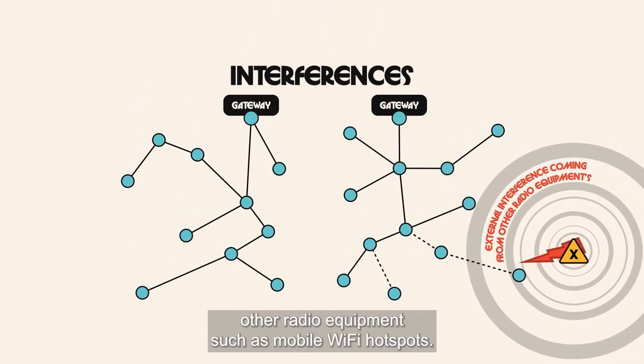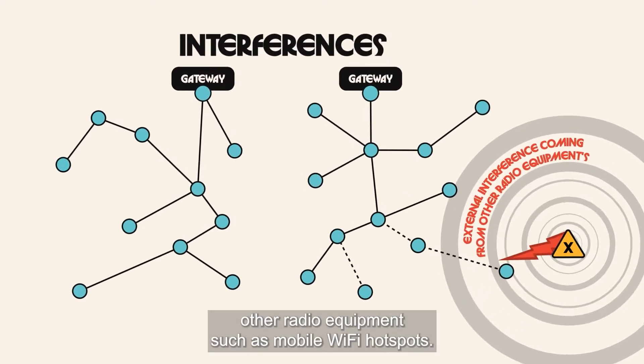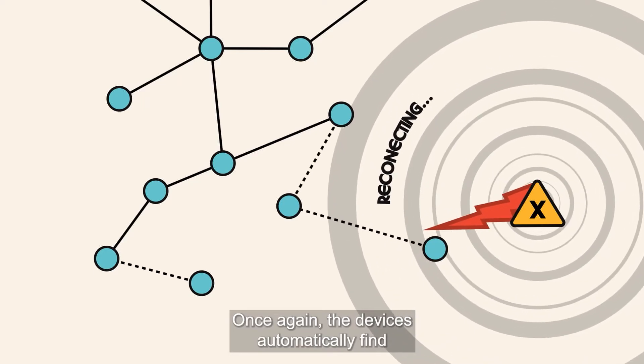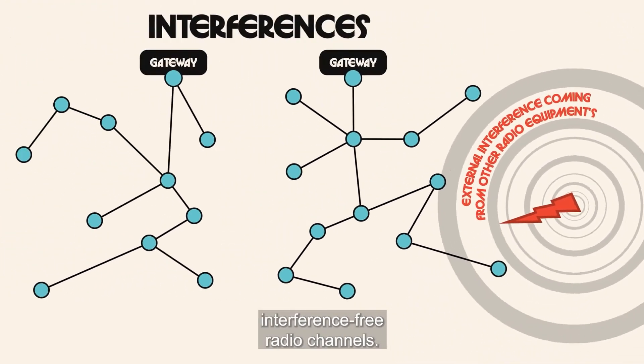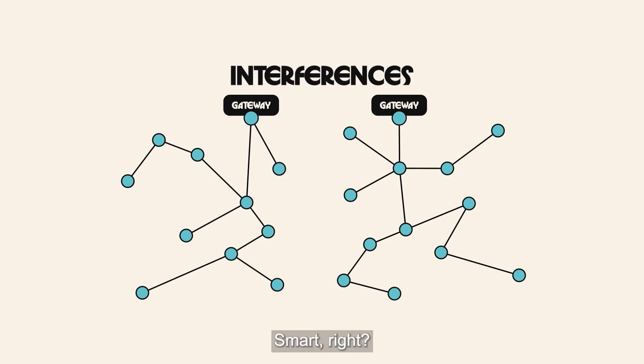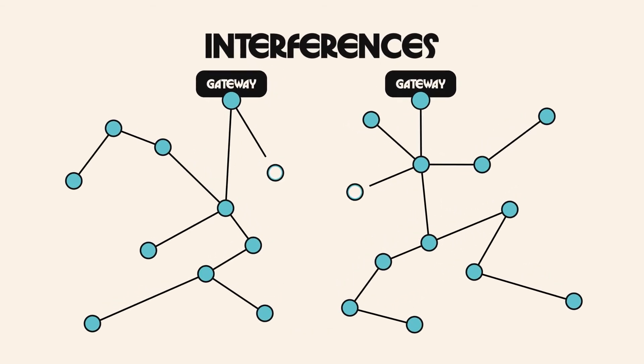radio equipment such as mobile Wi-Fi hotspots. Once again, the devices automatically find interference-free radio channels. And only the devices that interfere change channels—the remaining network stays unchanged. This also minimizes interference generated by Wirepass. Smart, right?